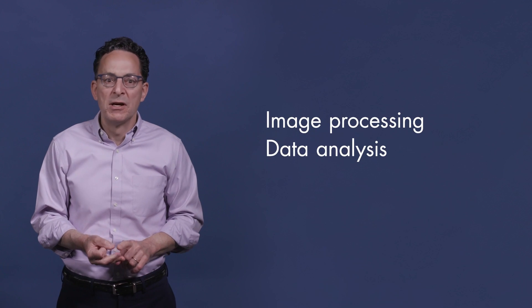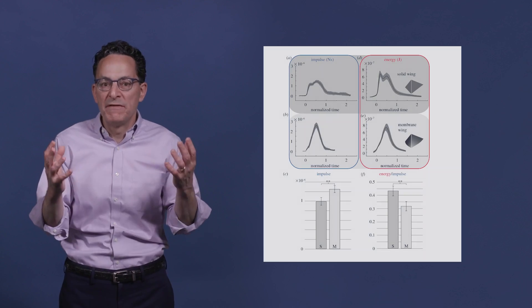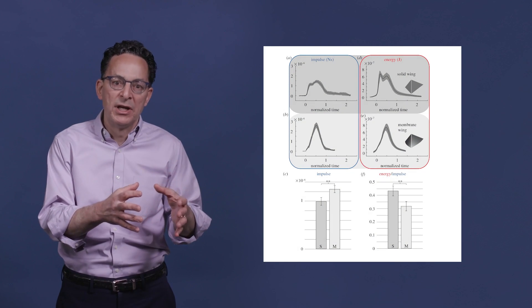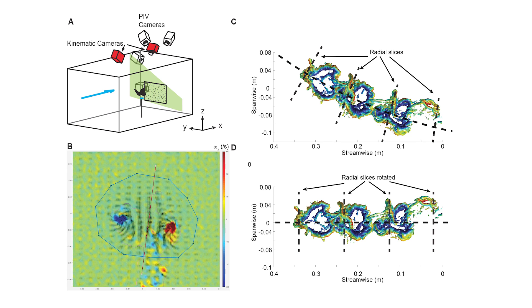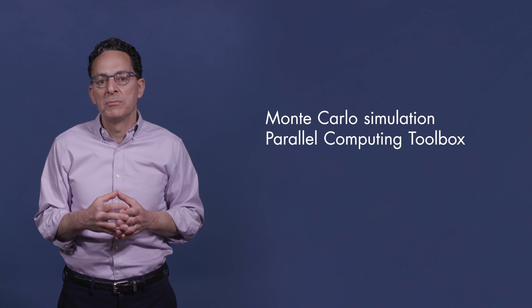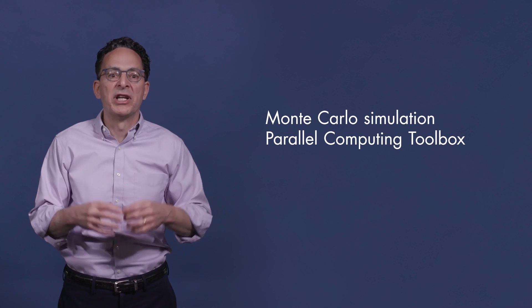How was MATLAB used? MATLAB was used for image processing, data analysis, modeling, and visualizations. The data include time series of vector fields to calculate aerodynamic forces and power. The researchers used MATLAB to analyze the kinematics of the butterflies by tracking the motion of various morphological markers from high-speed videos. They performed an error analysis using Monte Carlo simulation with the Parallel Computing Toolbox, where they studied the effect of random noise on kinetic energy.